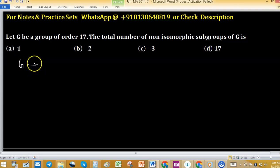Let G be a group of order 17 and we have to find the number of non-isomorphic subgroups of G. Non-isomorphic subgroups means they are different in some properties.